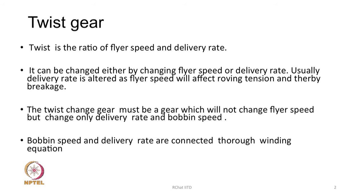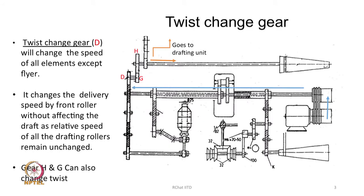If we study the gearing plan of the machine, delivery rate and bobbin speed are basically interconnected. The designer of the drive part of the machine has given flexibility so that twist can be easily changed. One can identify the gear if studying the gearing plan carefully and objectively. In this gearing plan, gear D will change the speed of all elements except the flyer.